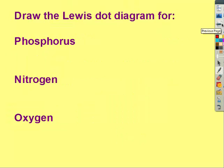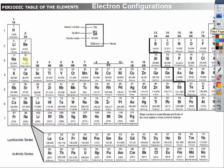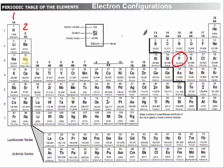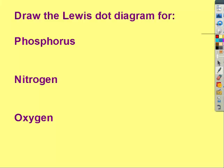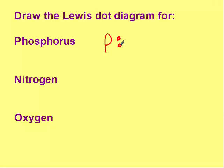To draw the Lewis dot diagram for phosphorus, first we find it. It has 5 valence electrons. So when filling our Lewis dot diagram, the first 2 get paired up, and then you put 1 per side. So that's our Lewis dot diagram for phosphorus.